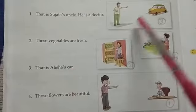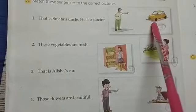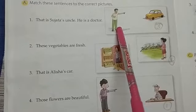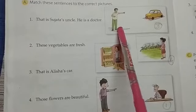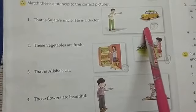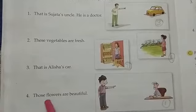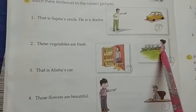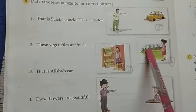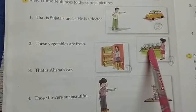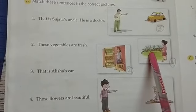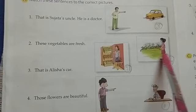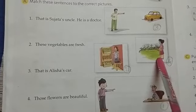Sentence three: That is Alicia's car. The car is one in number and the person is talking from far away, so number three will be put in this picture. Sentence four: Those flowers are beautiful. The girl is talking about the flowers which are more than one and the flowers are far away from the girl, so we will put number four in this picture.